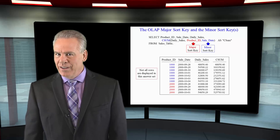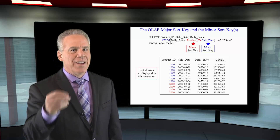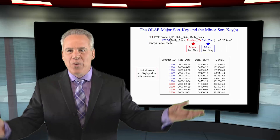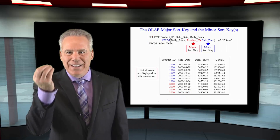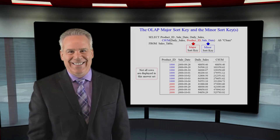Remember, in ordered analytics we're always going to sort first, but here we have a multi-column sort — a major sort on product ID and a minor sort on sale date. So first all the rows are sorted by product ID 1000, and all ties within 1000 will be further sorted by sale date. Once that happens we're ready to begin the calculations and the cumulative sum is calculated.